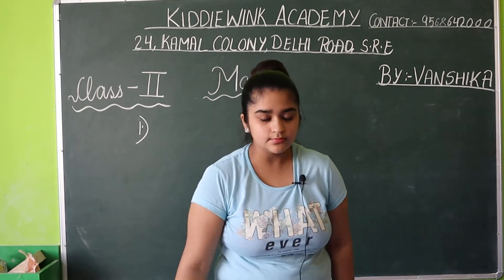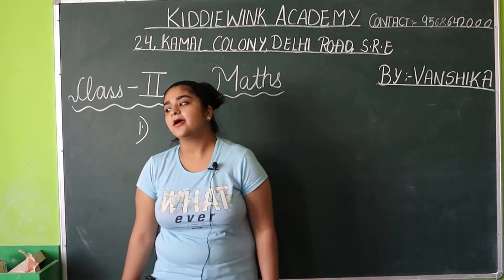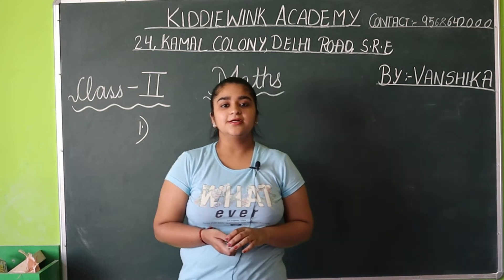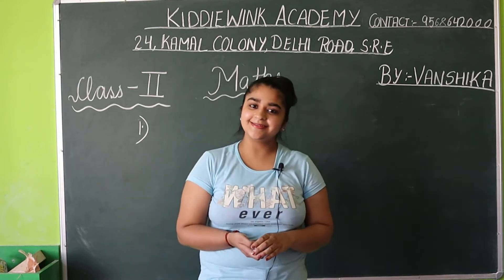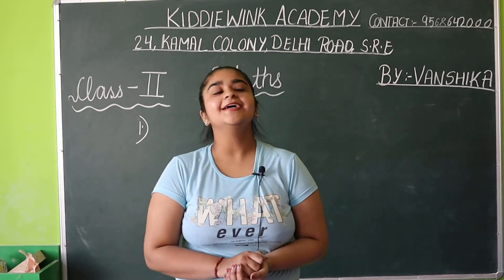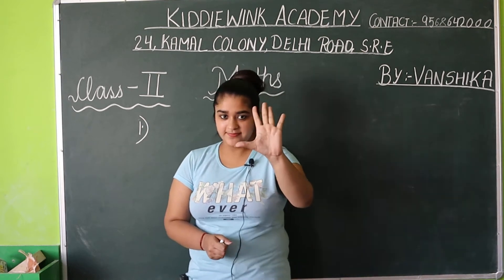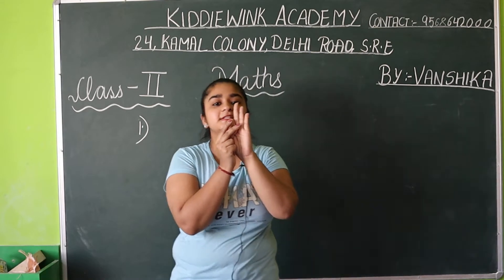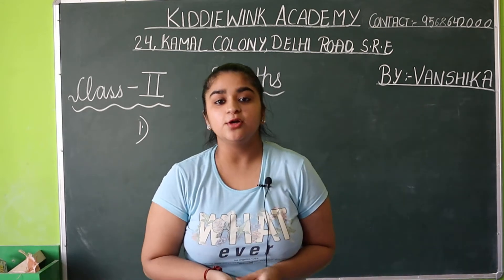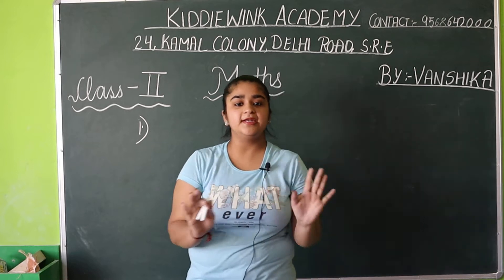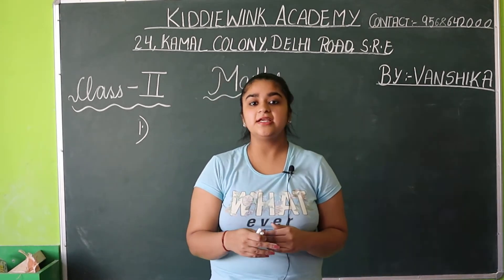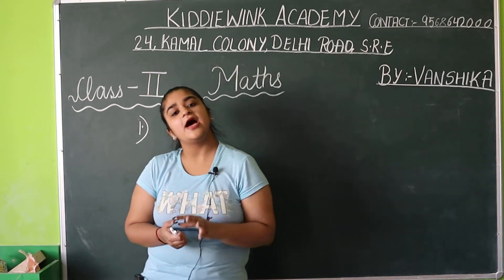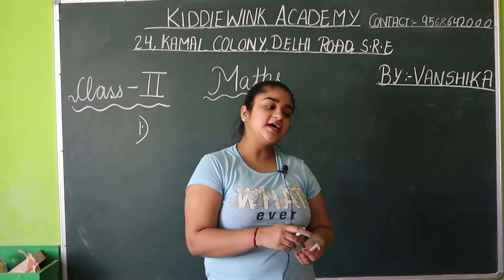Kaisa nikalenge? Example lete hain. Maine aapko five toffees dhi thi. Two us mein se maine kha ke di thi — woh toh khali di. Five maine aapko di, two maine us mein se sirf rapper wali di. Bachy kitni? Three. Aapke paas toh kitni toffees aayi? Maine aapko five di, woh maine nahi rakhi. But aapne kha hi kitni? Sirf three thi, kyunki two ke sirf rappers the. Samaj aaya?